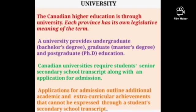Canadian higher education is delivered through universities. Each province has its own legislative meaning of the term 'university.' A university provides undergraduate or bachelor's degrees, graduate or master's degrees, and post-graduate or PhD education. Canadian universities require senior secondary school transcripts along with applications for admission, which may also outline additional academic and extracurricular achievements.